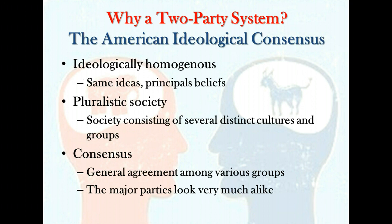American ideological consensus: Americans are, on the whole, an ideologically homogenous people. Over time, the American people have shared many of the same ideals, basic beliefs, and patterns of belief. The United States is a pluralistic society consisting of several distinct cultures and groups, with various ethnic, racial, religious, and other social groups competing for and sharing political power. Still, there is a broad consensus — a general agreement among various groups on fundamental matters.